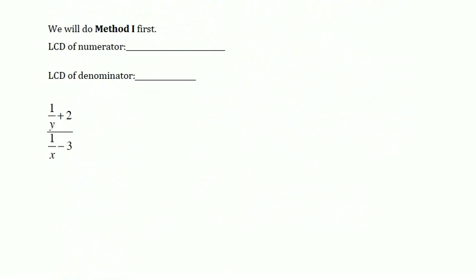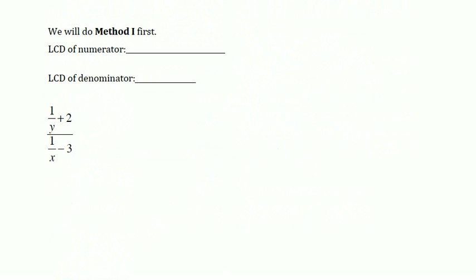Starting with method one, we have this expression. The first thing I'm going to do is identify my LCDs. I have only one denominator in the numerator of the expression, so the LCD of my numerator is Y. I have only one denominator in the denominator — meaning the denominator of the denominator — and that is X. So the LCD of my denominator is X. Only using this method can we have separate LCDs for the numerator and denominator.